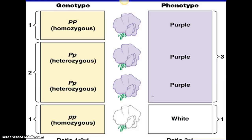Here's an example of what that would look like. If we have big P, big P, that's the genotype, and the phenotype is purple. If we have big P, little p, the phenotype is still purple. And then little p, little p is white. So in order to show a recessive trait, you have to have two of the little letters — two of the recessive alleles.